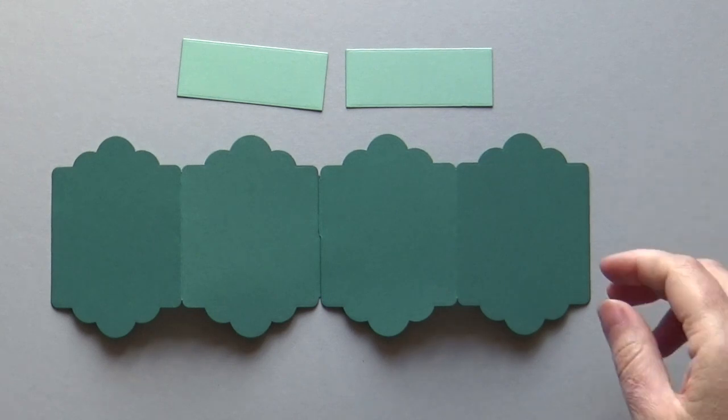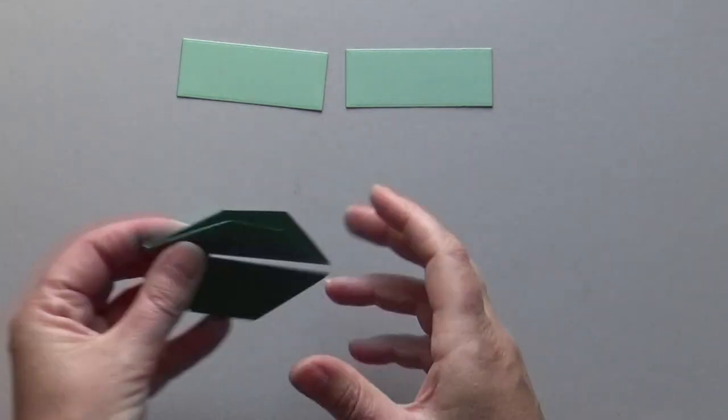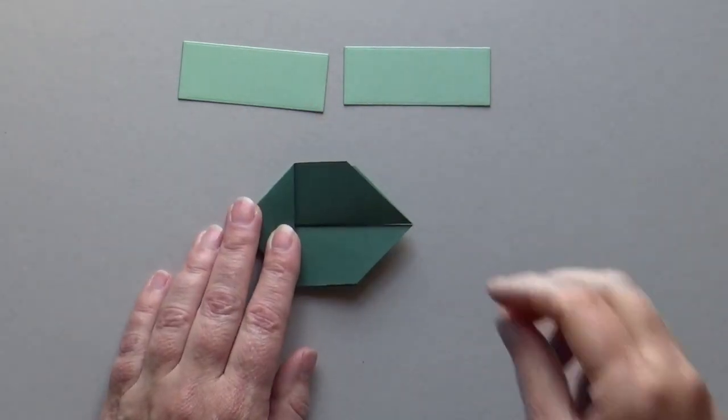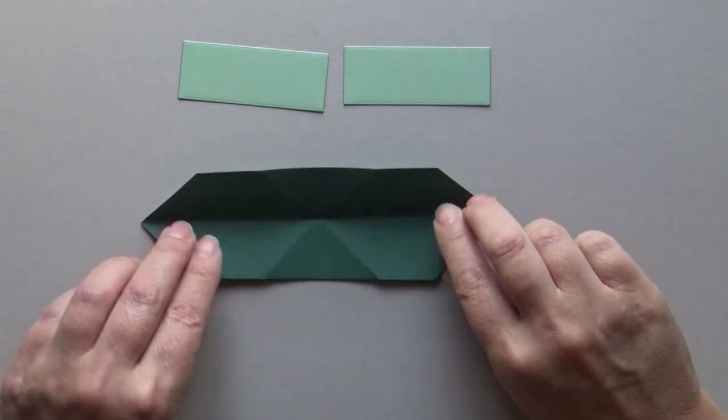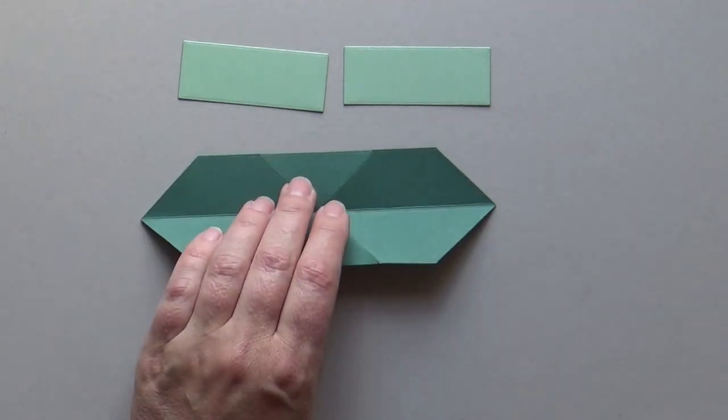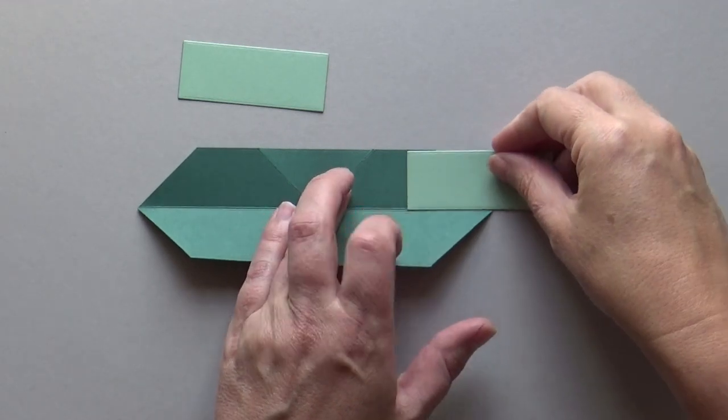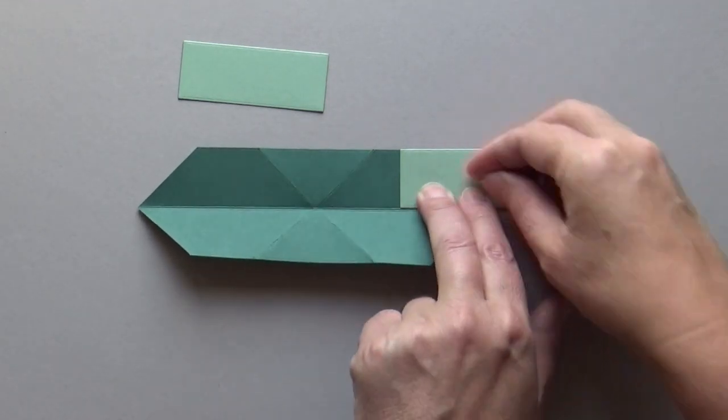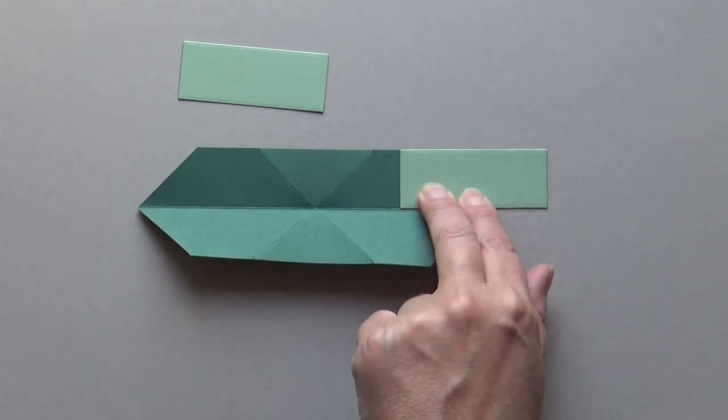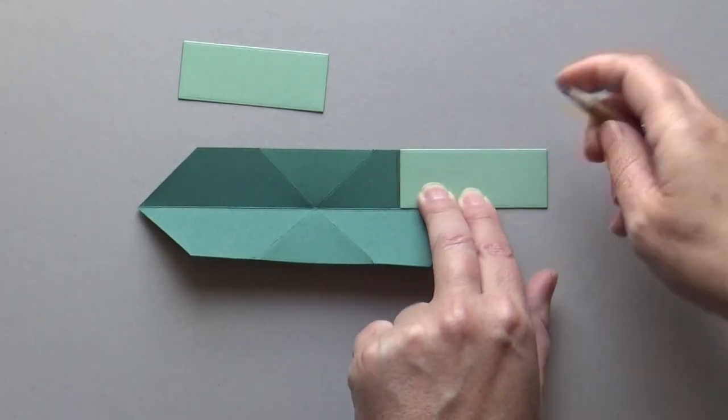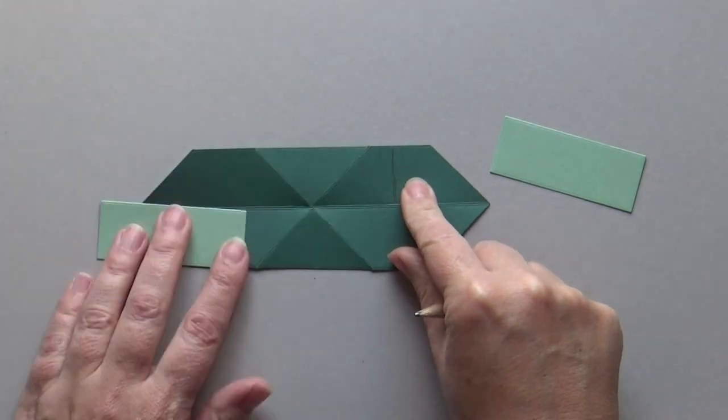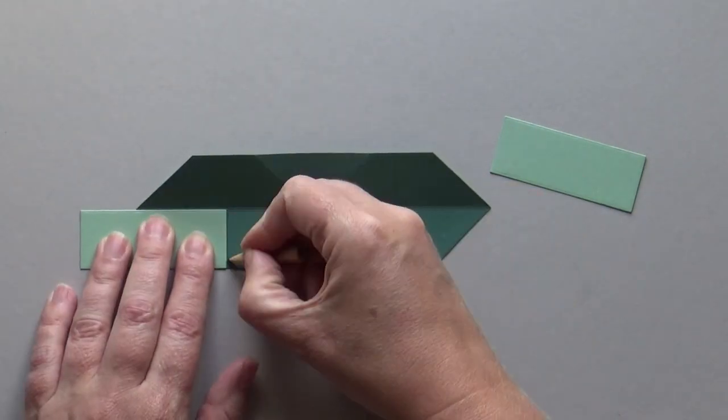The twist system needs to be extended to create enough stability for the pop part. Your diagonal scoring line must lay in a valley fold. Lay the rectangle on the twist system equal to the diagonal scoring line. Mark the left side with the pencil line.